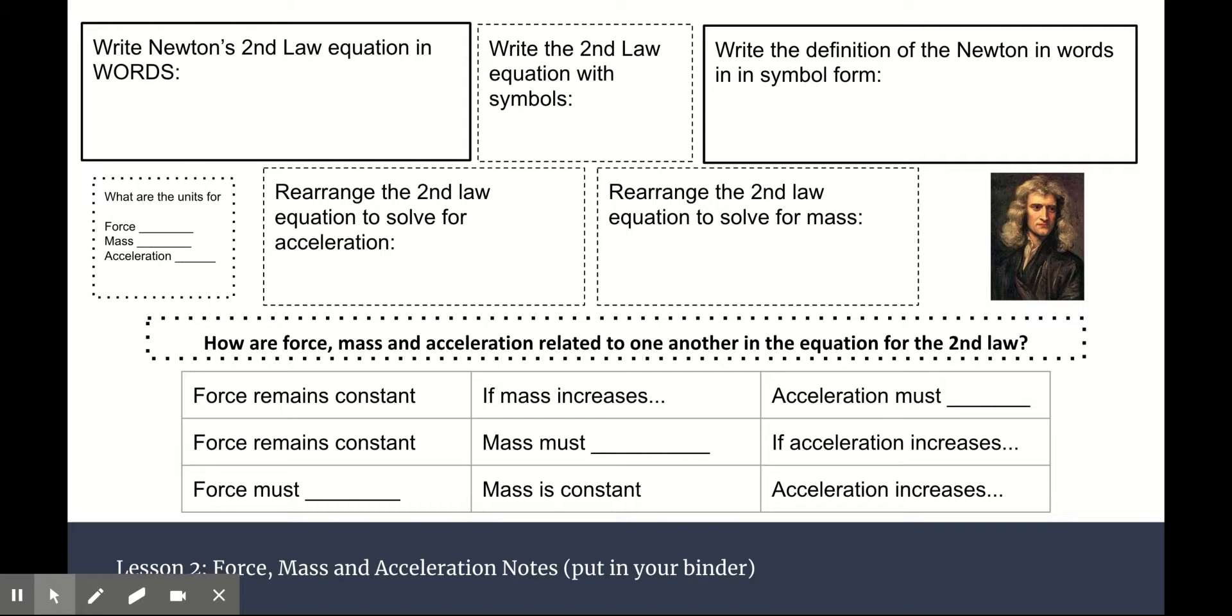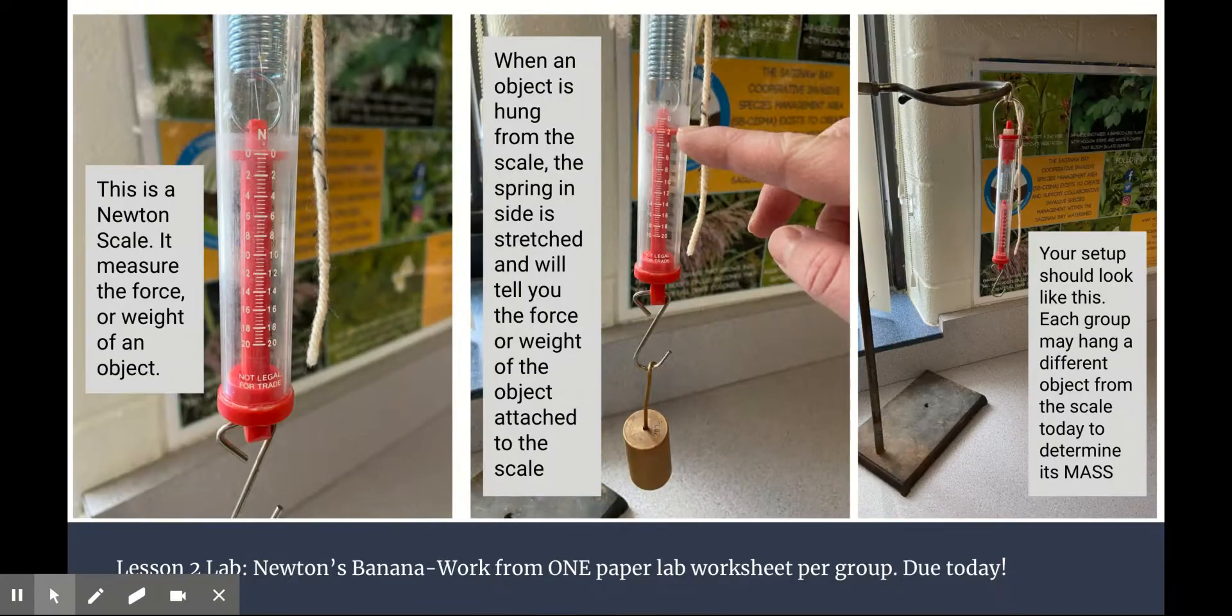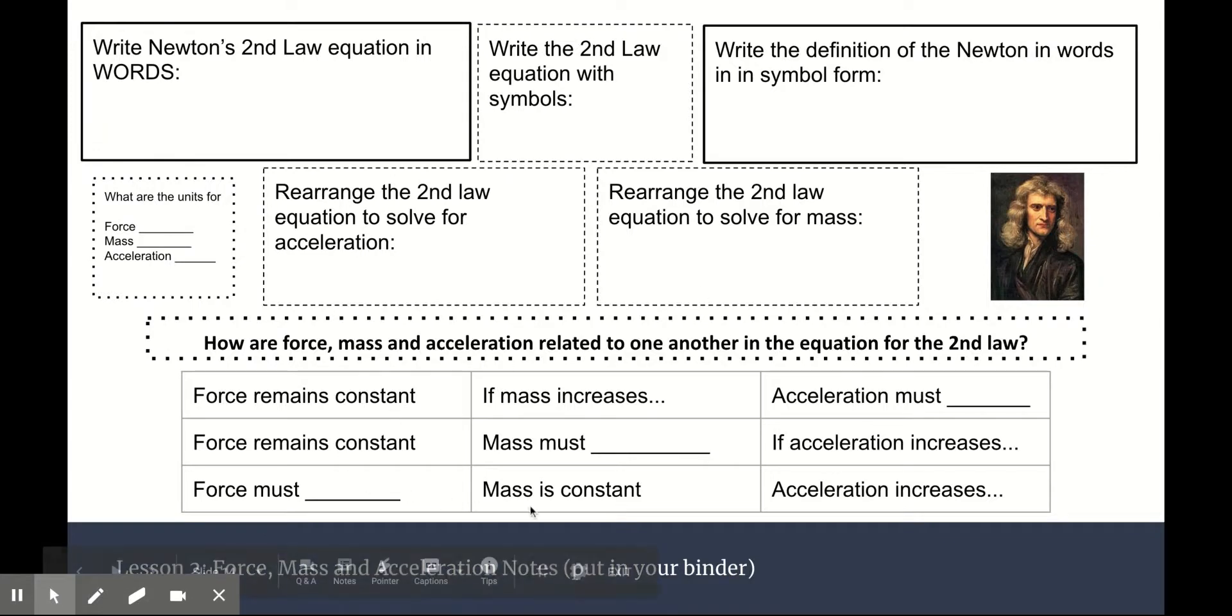We do need to know the formulas. F equals MA is the base formula. You can find different ways to solve for different variables. For instance, you'll need to figure out how can we solve for A and how can we solve for M. So mathematically, these things are all related in a really simple way.